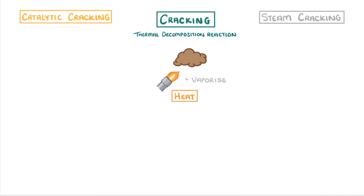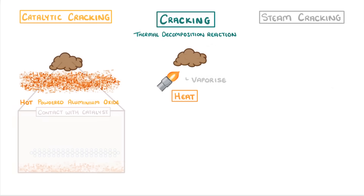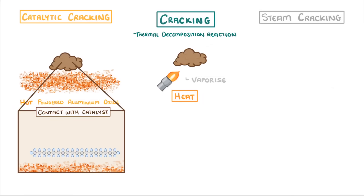Then if we were using catalytic cracking, we would have some hot powdered aluminium oxide ready as our catalyst. We'd then pass our hydrocarbon vapor over the powder, and as the long hydrocarbons come into contact with the catalyst, they'd split apart into two smaller hydrocarbons.